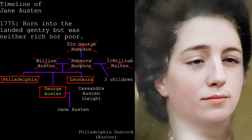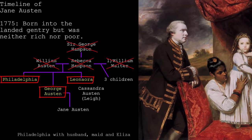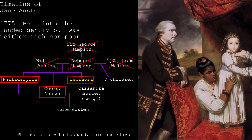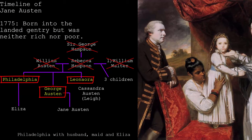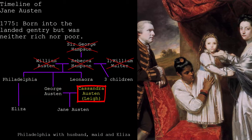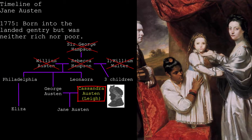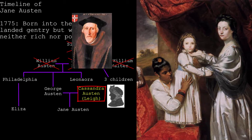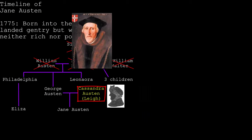Philadelphia was sent to live with the Freeman family, wealthy relatives on her mother's side. She would go on to marry a surgeon for the East India Company, move to India, and become an English socialite — her daughter Eliza and cousins of Jane even marrying a count. As for Jane's mother, Cassandra Leigh, her family could trace themselves back to the Barons Leigh and Chandos, and in the previous century her ancestor Sir Thomas Leigh had been Lord Mayor of London when Elizabeth I became queen.